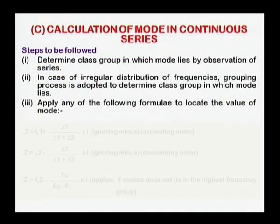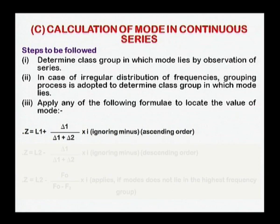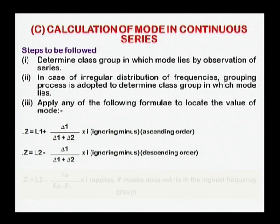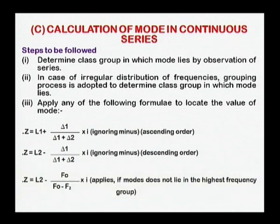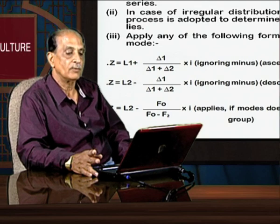After that, we have to apply a formula — any of the three formulas. The first is z = L1 + (delta1 / (delta1 + delta2)) × i. We have to ignore the minus sign, and this formula is very useful in respect of ascending order. The second formula is L2 − (delta1 / (delta1 + delta2)) × i, ignoring the minus sign, which is highly useful whenever we have descending order of the values. The third is L2 − ((F0) / (F0 − F2)) × i, but this applies only when the mode does not lie in the highest frequency group. We have to see the situation in which one of the formulas can be applied.